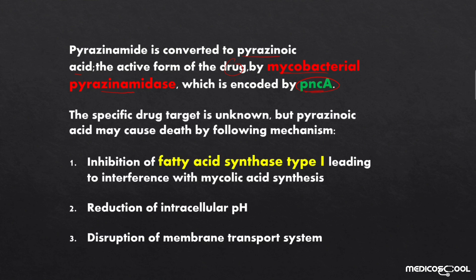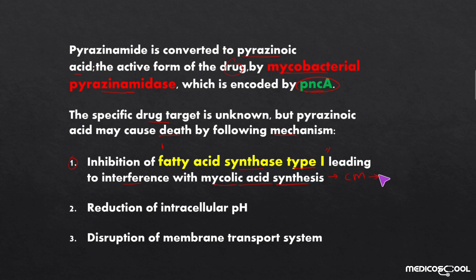Although pyrazinoic acid has no specific drug target, it may cause the death of Mycobacterium tuberculosis by the following mechanisms. The first is that it may inhibit fatty acid synthase type 1 (FAS-1), which leads to interference with mycolic acid synthesis, and thus cell membrane synthesis, leading to the death of Mycobacterium tuberculosis.